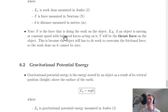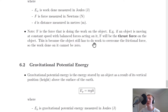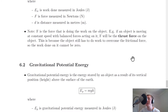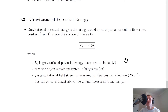Note: F is the force that is doing the work on the object. For example, if an object is moving at constant speed with balanced forces acting on it, F will be the thrust force acting on the object. This is because the object still has to do work to overcome the frictional force, so the work done cannot be zero. If the two forces were not balanced, we would calculate the unbalanced force first.